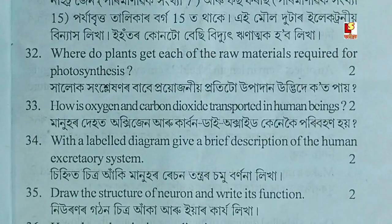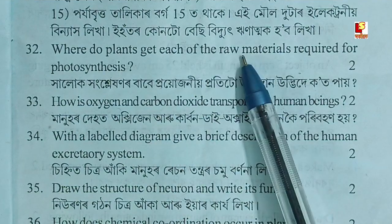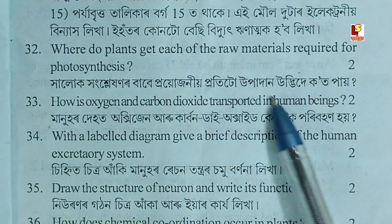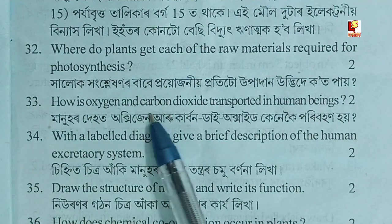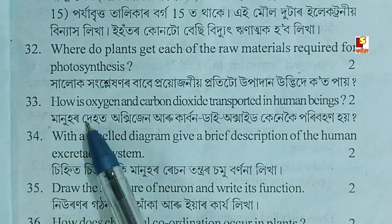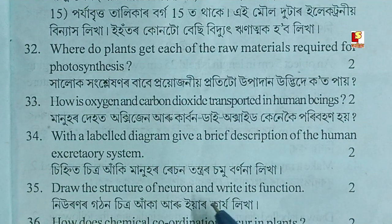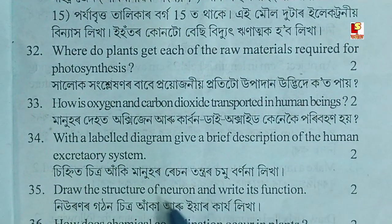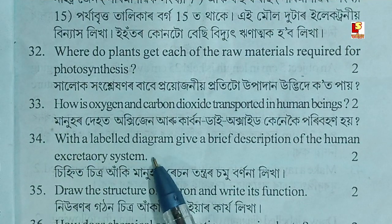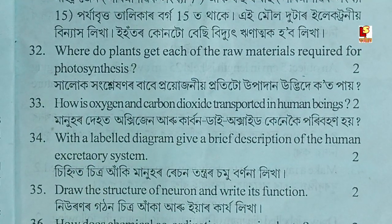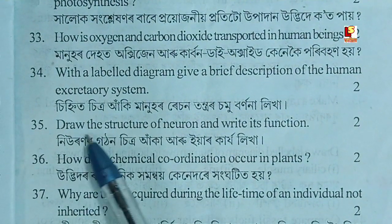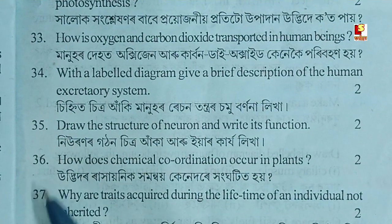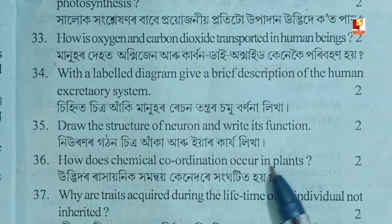Where do plants get each of the raw materials required for photosynthesis? How is oxygen and carbon dioxide transported in human beings? Give a labelled diagram and brief description of the human circulatory system. How does chemical coordination occur in plants?